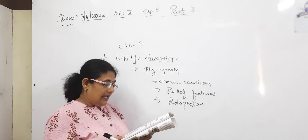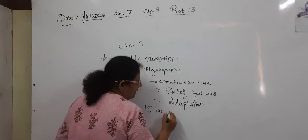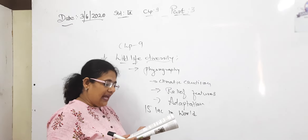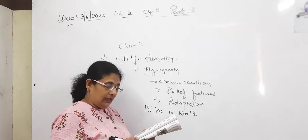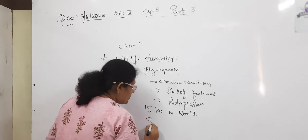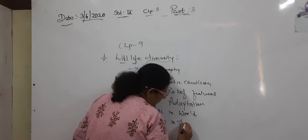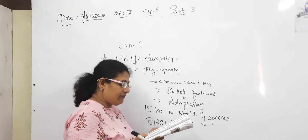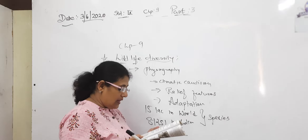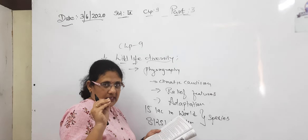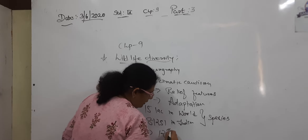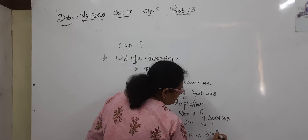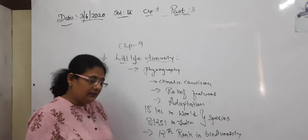There are about 15 lakh species in the world. Out of that, 81,250 species are found in India. India stands 12th in the world in terms of biodiversity. So our rank in biodiversity is 12th.